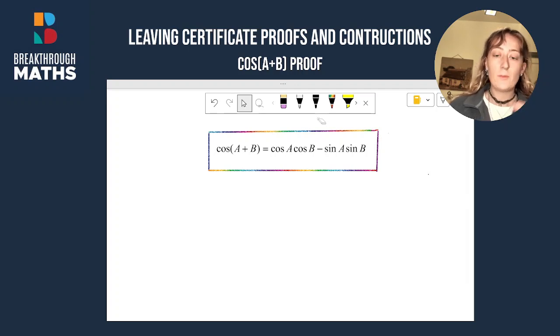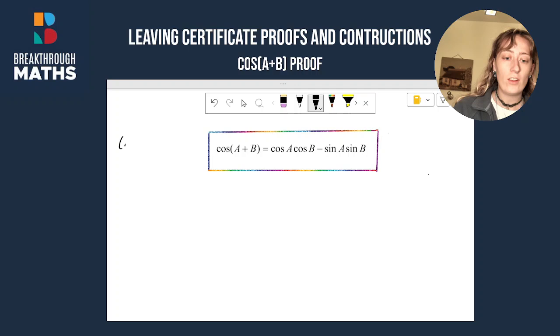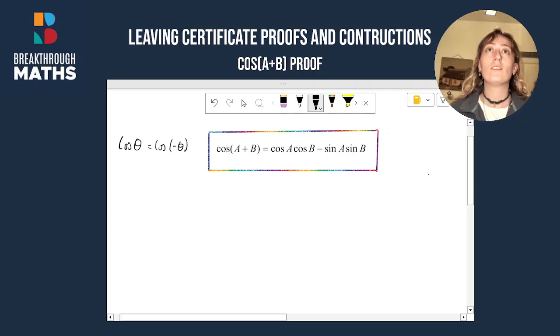This proof is going to make use of the following fact: that cos θ is equal to cos of minus θ. What I mean is that cos of any positive angle is equal to the cos of the minus of that angle.